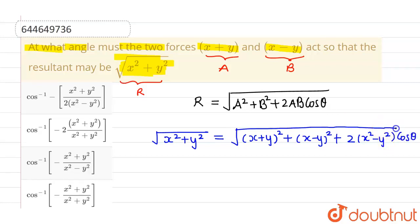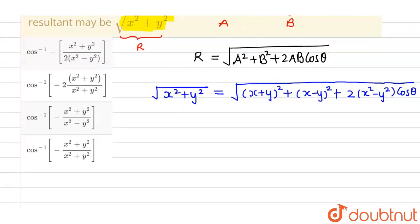Now from here, we have to find out the value of theta. Now if I square both sides, then I will be getting x²+y² on left hand side and on right hand side on expanding this particular, I will be getting x²+y²+2xy.